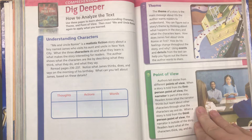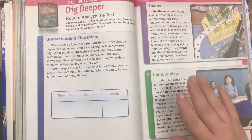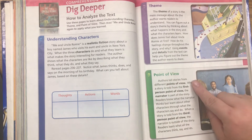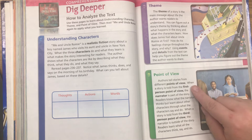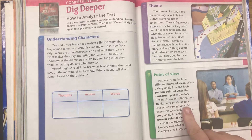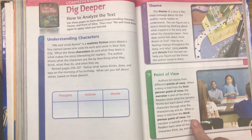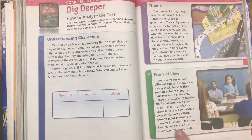Let's review point of view — this one's really important because it depends on how well we can get to know our characters if we know what point of view the story is coming from. Authors tell stories from different points of view. When a story is told from the first-person point of view, the narrator is part of the story; readers know what the narrator thinks but learn about other characters through what they say and do. When a story is told from the third-person point of view, the narrator is outside of the story; readers learn what all the characters think, say, and do.